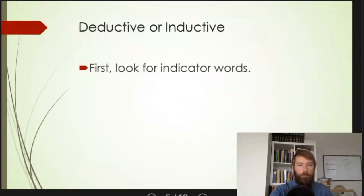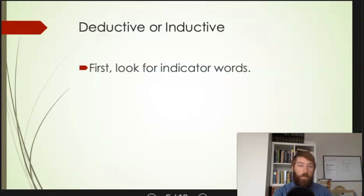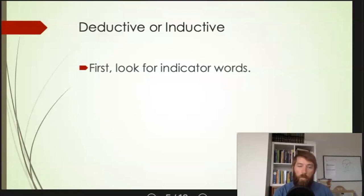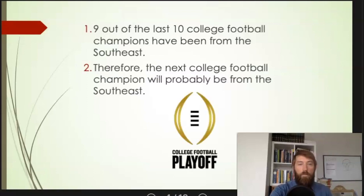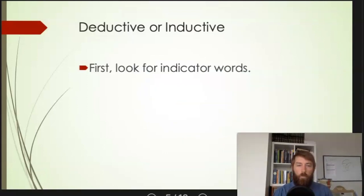How do you tell the difference? Well, indicator words can help you tell whether or not something is an argument, and they can also help you tell whether an argument is deductive or inductive. This isn't a guarantee — it's not infallible. Indicator words might lead you astray because some people might just be mistaken about what kind of argument they have. A lot of times inductive arguments will have 'probably' in the conclusion, like 'the next college football champion will probably be from the southeast.' Look for indicator words, but don't rely 100% on them.